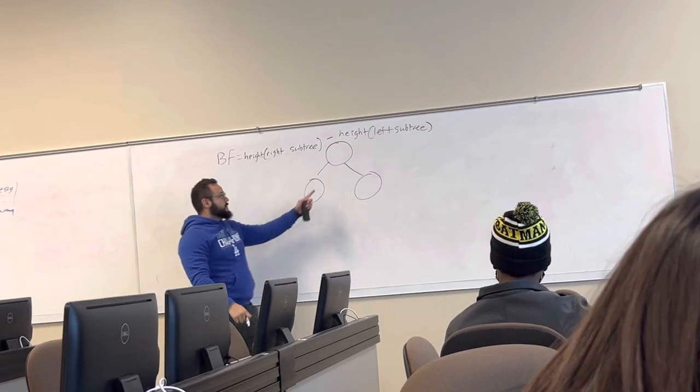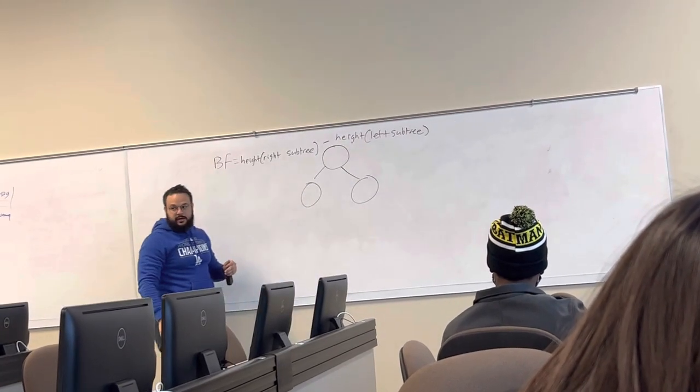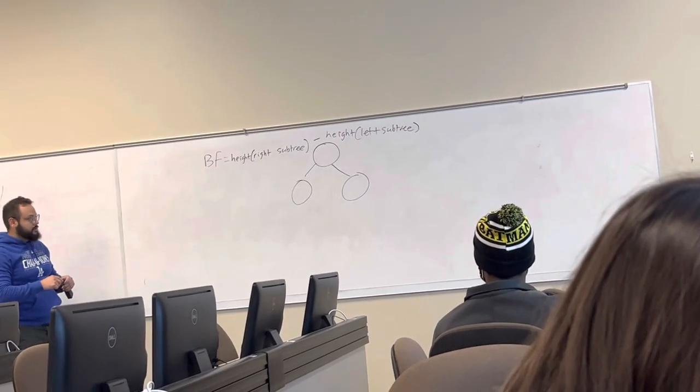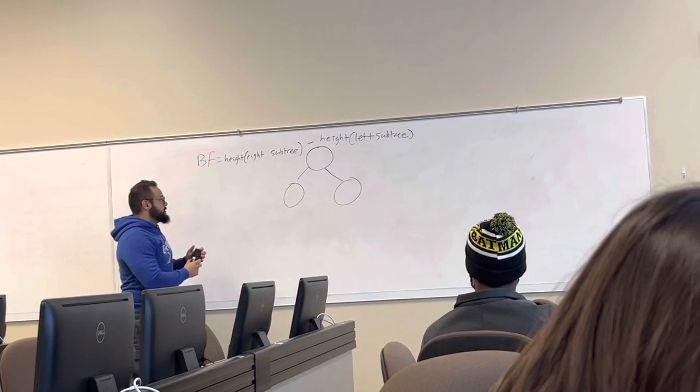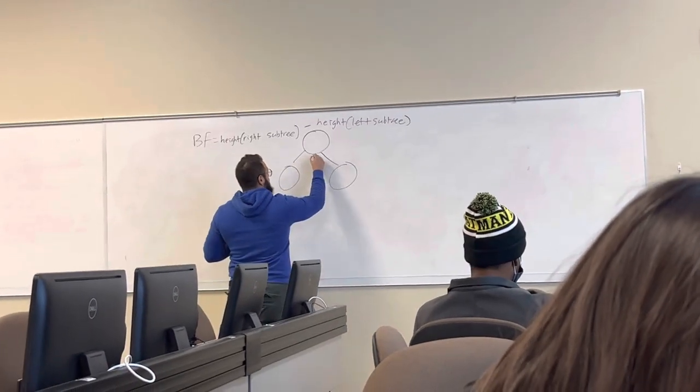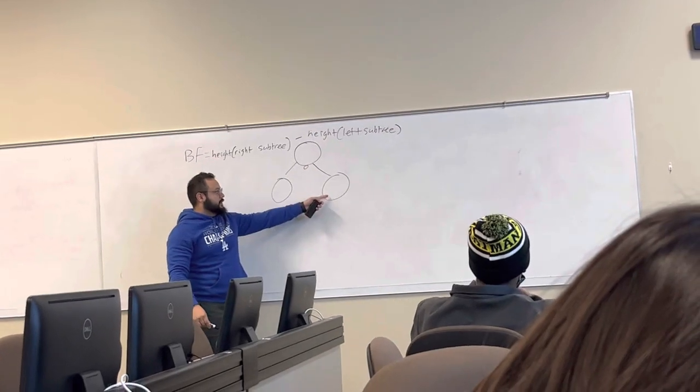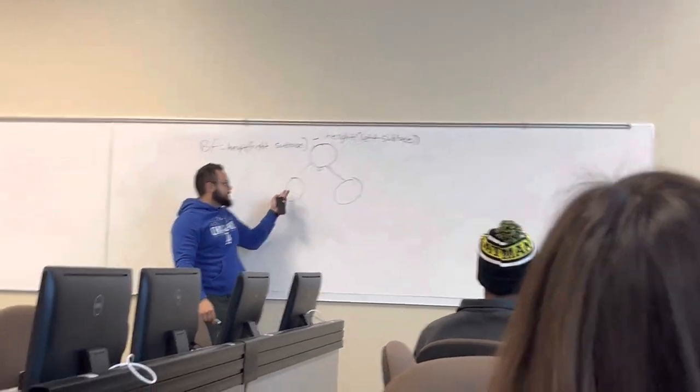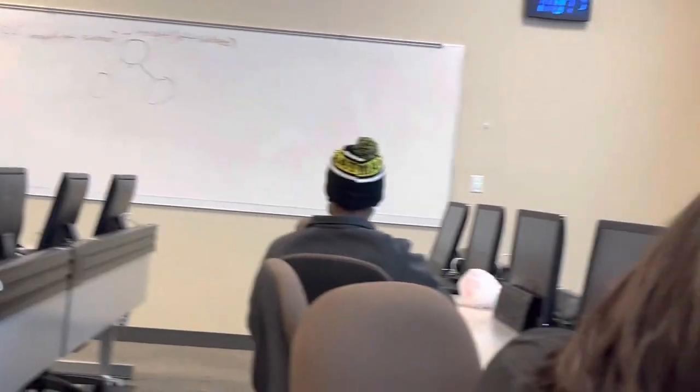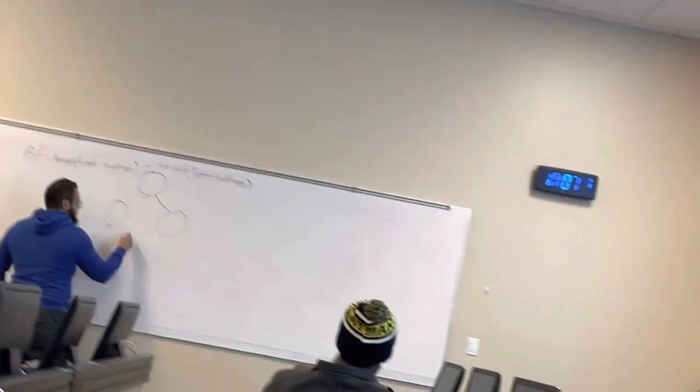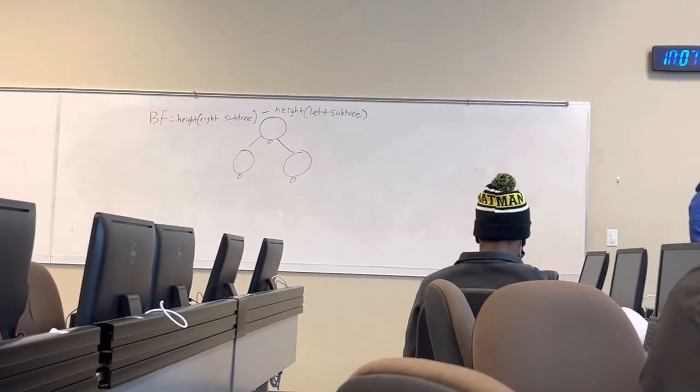So, for instance, what is the balancing factor for this node in this picture? Zero. It's just zero, right? Because the height of your right subtree, if you count this as one, and then the height of your left subtree is one. The next one is zero. And then, same for all these things over here. Zero. Zero. Any questions about balancing factor?